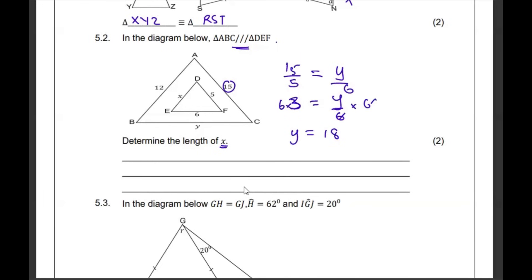Then, they said X, not Y. What's wrong with me? But it's fine. I'll do the X. With the X, I'm going to say 5 over 15 is equal to X over 12. Then, it's going to be 1 over 3 is equal to X over 12 multiplied by 12, meaning that your X is going to be a 4. This is 18.